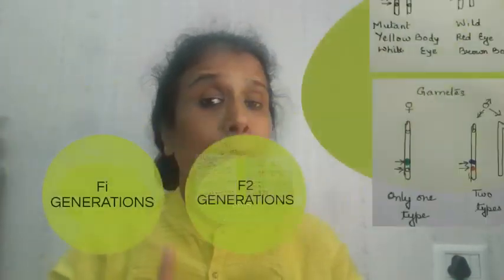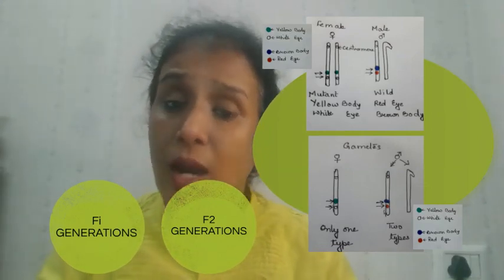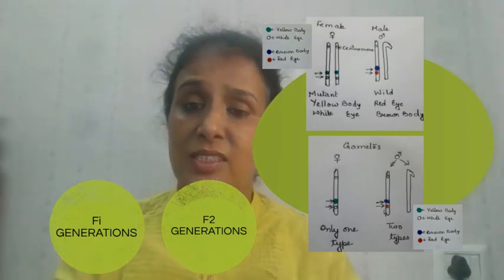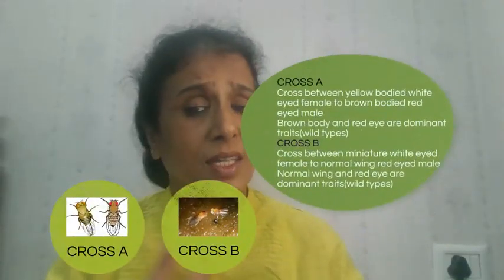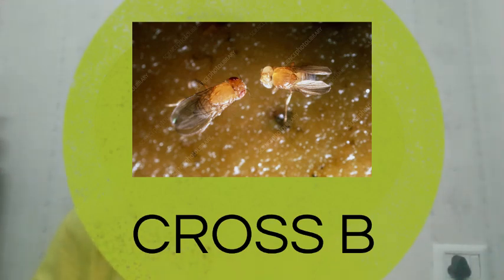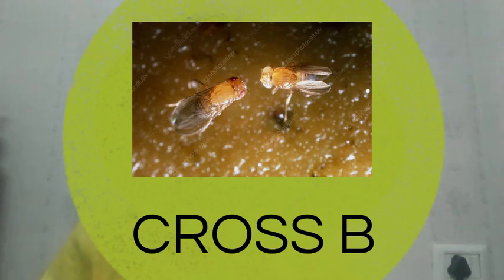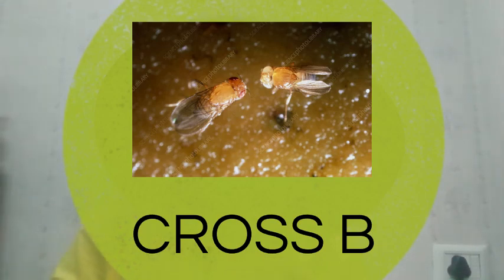This is totally different from Mendel's dihybrid cross ratio of 9:3:3:1, which gives 62.5% parental and 37.5% recombinant. To verify his result, Morgan performed another cross. In Cross B, he took a red eye and normal wing male and crossed it with a white eye and miniature wing female. Again, the female is mutant and the male is wild type — red eye is dominant over white eye, normal wing is dominant over miniature wing. And again, this is a sex-linked trait.